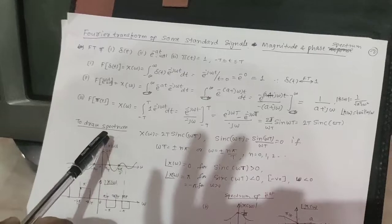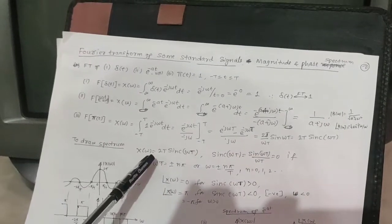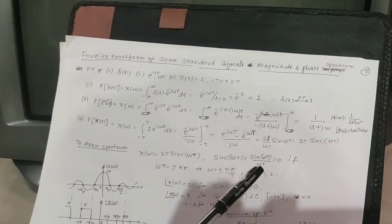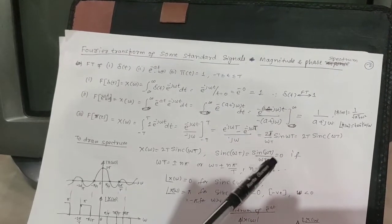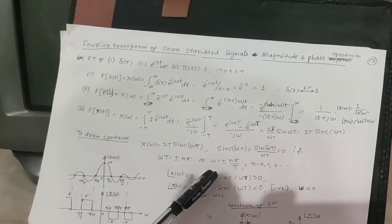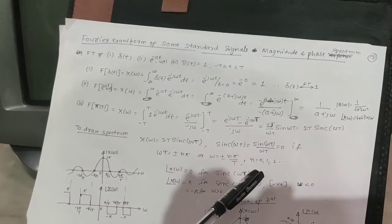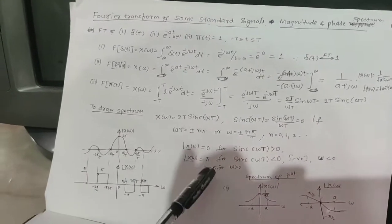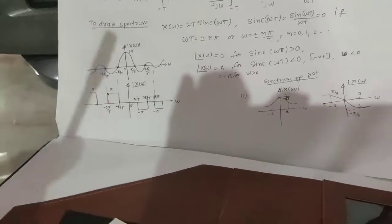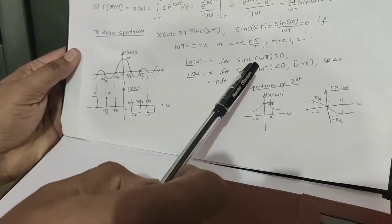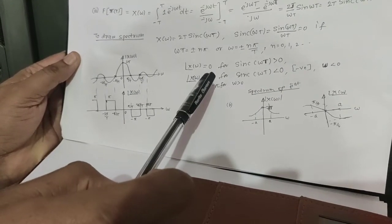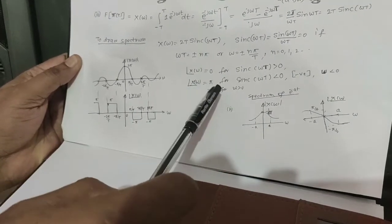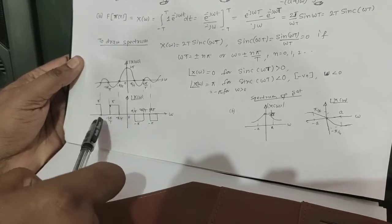To draw the spectrum of the rectangular signal, we need to find the magnitude and phase. X(ω) = 2T · sinc(ωT), where sinc(ωT) = sin(ωT)/(ωT). This is zero when ωT = ±nπ, or ω = ±nπ/T, for n = 0, 1, 2, … up to infinity. For the phase spectrum: the phase is 0 when sinc(ωT) > 0, phase is π when sinc(ωT) < 0. For ω > 0 in a negative lobe, phase is +π; for ω < 0, phase is −π.